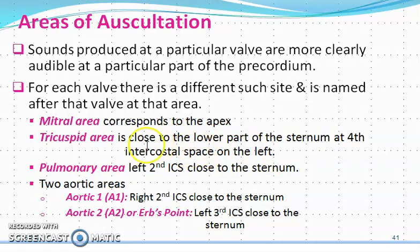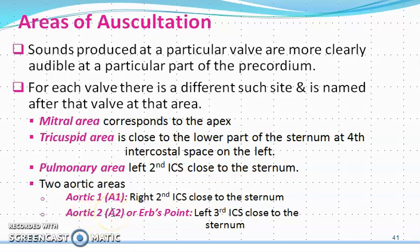The pulmonic valve lies between the right ventricle and the pulmonary arteries. The aortic valve lies between the aorta and the left ventricle. The aorta is subdivided into two parts: aortic one and aortic two, also called the ABS area — A1 and A2. So there are four types of valves: mitral, tricuspid, pulmonic, and aortic.